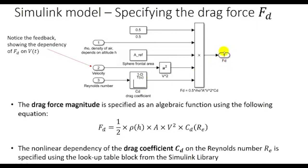Moving a step backwards, we construct the aerodynamic resistance force — specifically its magnitude — which is given by the expression defined in part one. This expression is a multiplication of various signals and constants, so it can be the output of a multiplication operator with five inputs. The first input is the constant 1/2, the second is the density of air, the third is the sphere frontal area, and the fourth is the speed squared, calculated as the output of a square operator receiving the velocity of the sphere as input.